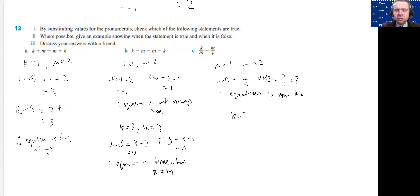And then if we try again. Let's say k equals 5 and m equals 5. Then the left hand side is going to be 5 over 5, which is 1. And the right hand side is going to be 5 over 5, which is also 1. So therefore, equation is true if k equals m as well.